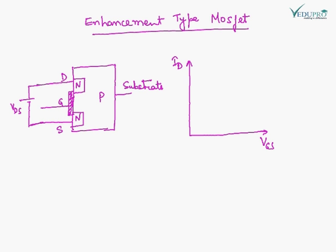This is the basic construction of enhancement type MOSFET. Here we can see that the channel is not continuous. Here the channel is missing. Now, if we give a zero potential to gate, if we ground the gate, there will be no current. Why? Because the channel is not complete. Therefore, flow of current ID is not going to flow.